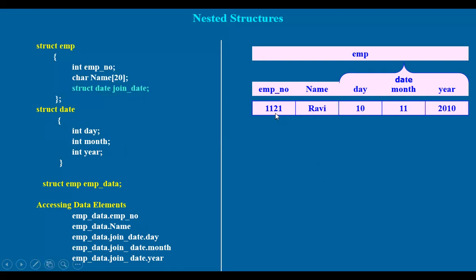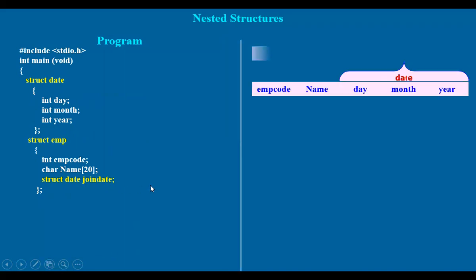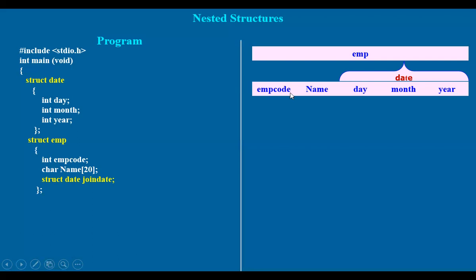Suppose the data is there — employee number, name as first two fields, and the third field is a structure, which is the data type of structure. So in this manner, we have two structures declared. The data and the data structure are nested inside the main structure.